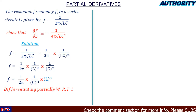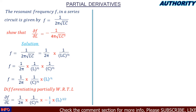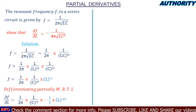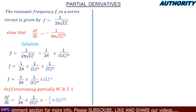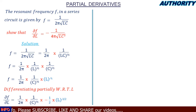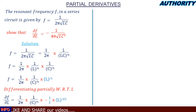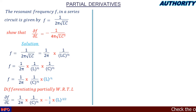Now we differentiate partially with respect to L. The constants (1 / 2π) and (1 / C^(1/2)) remain untouched. Differentiating L^(−1/2) brings the power down: we get (−1/2) × L^(−1/2 − 1), and −1/2 − 1 = −3/2.